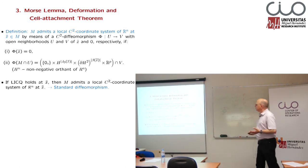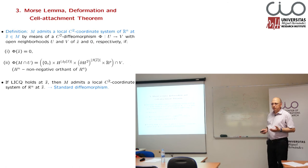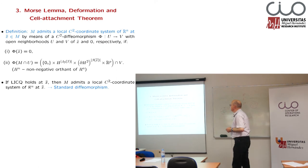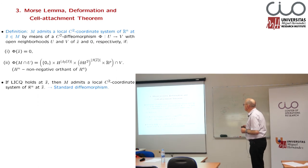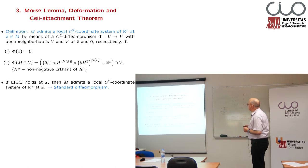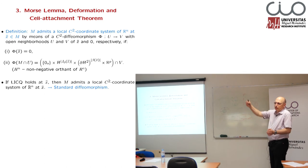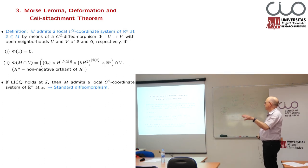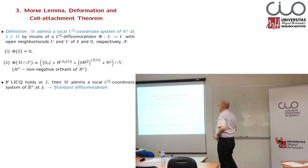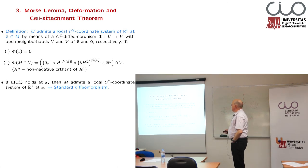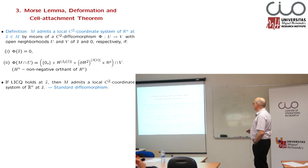Now let us come to the statement of the results. The first thing is we would like to state a Morse lemma — a normal form. We say that our feasible set admits a local C2 coordinate system of R^n at the point X-bar using a corresponding diffeomorphism as a coordinate transformation, so that our point under consideration is equal to zero. And then we get locally that our set M, intersected by a local neighborhood, equals a specific set.